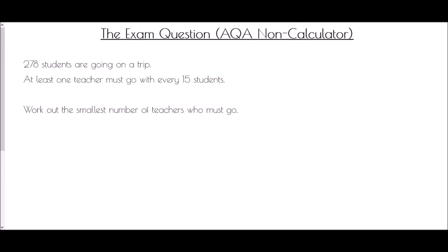And so we end with the exam question. And this came from the AQA papers on the old spec. It's a non-calculator question. And it says that 278 students are going on a trip. At least one teacher must go with every 15 students. Work out the smallest number of teachers who must go. So this is saying basically how many 15s will go into 278.